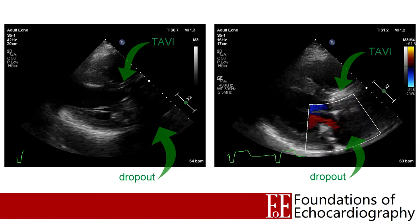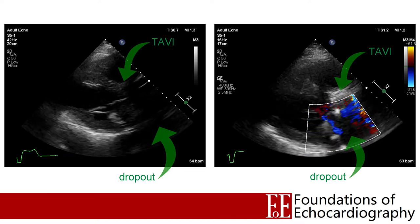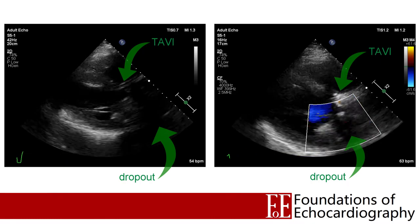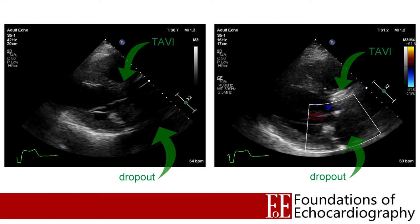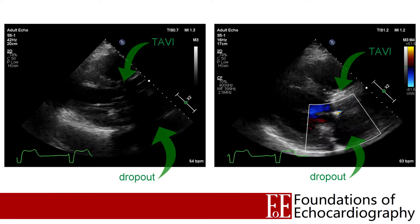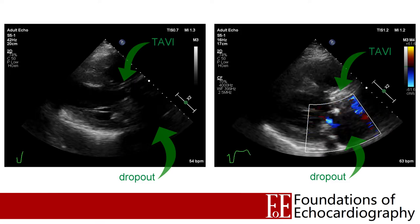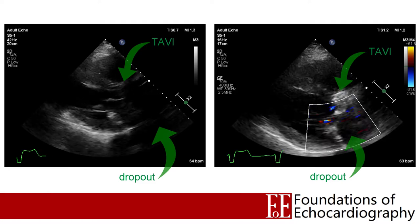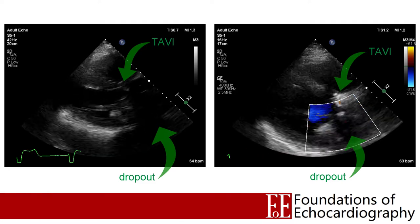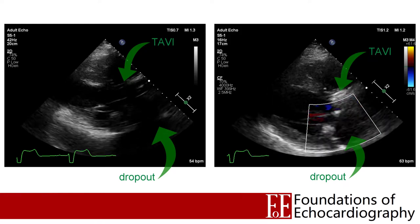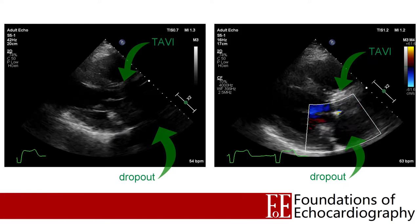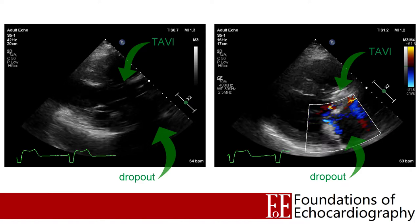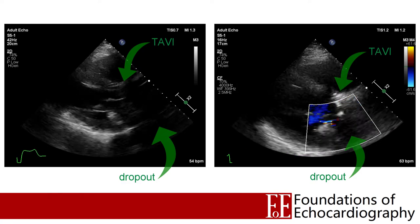The two images we're looking at now are both parasternal long axis views, with the 2D image on the left and a colour flow box placed over the left atrium on the right to capture any mitral regurgitation. I've chosen this image because the quality overall is pretty poor — this is a patient who's just had a TAVI and has unfortunately deteriorated and ended up on a mechanical ventilator. They've got positive pressure ventilation, they're lying supine, and they now have prosthetic material in the aortic valve position that's casting a shadow over part of the left atrium, giving us diminished returning signal for both the 2D image and the blood flow in the left atrium.